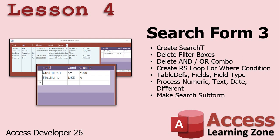The second kind of search form that we're going to build uses a criteria table. You can put all kinds of criteria in there — last name like this, credit limit under this, credit limit greater than that, state equal to that — as many criteria as you want. Then we'll use a record set to read through that information and to filter the list accordingly, so you can have an unlimited number of criteria.